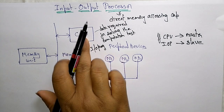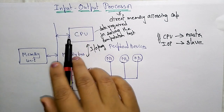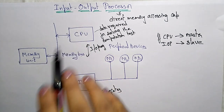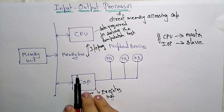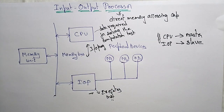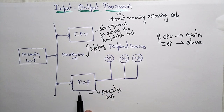Whenever the CPU becomes the slave — meaning when it hands over or assigns the task, or hands over the system bus to another processor — it becomes the slave. At that point, the Input-Output Processor acts as the master.